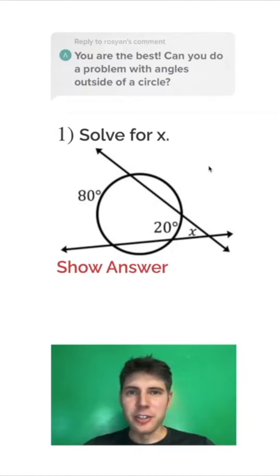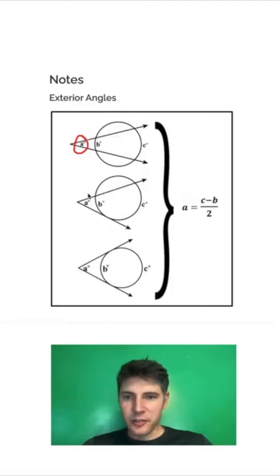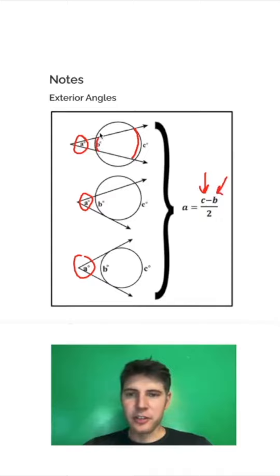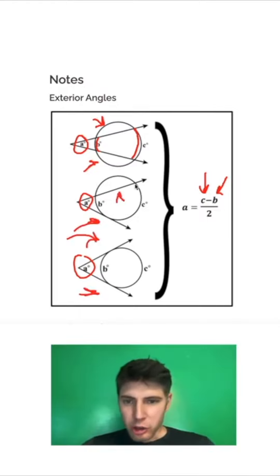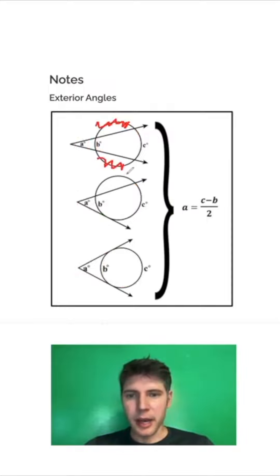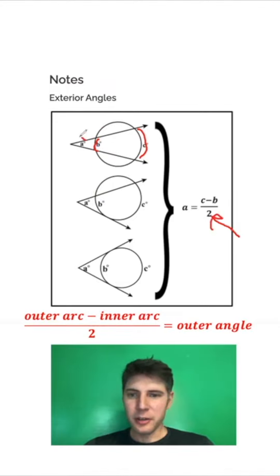Can you do a problem with angles outside of a circle? How do we solve for X outside the circle when this arc is 80 and this arc is 20? The notes say: to solve for an outside angle, take the larger arc that's cut — that's C — subtract the smaller arc — that's B — and divide by 2. No matter if it's two secants, a tangent and a secant, or two tangents, it's always the same pattern: larger arc minus smaller arc, divided by 2. The stuff outside of your lines doesn't matter for this particular equation.